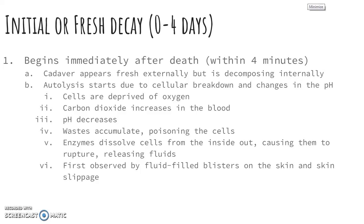As cells are deprived of oxygen, carbon dioxide increases in the blood and the pH decreases, making it very acidic. Wastes accumulate, poisoning the cells. Enzymes start dissolving the cells from the inside out, causing them to rupture and release fluids. The first observed signs of this are fluid-filled blisters on the skin and skin slippage, where the skin will actually start to slip off.